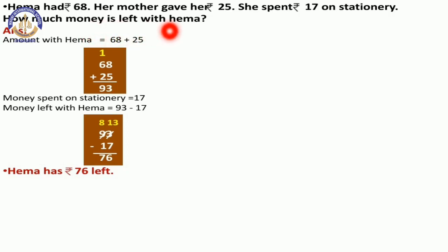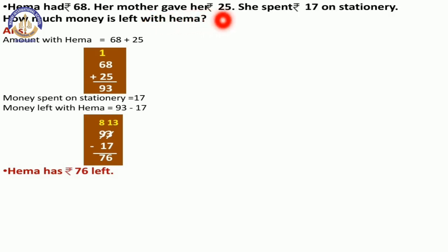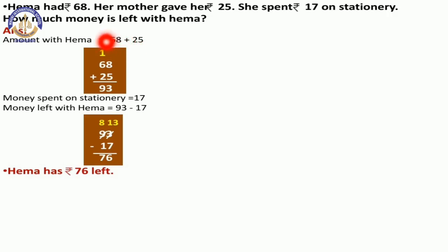What do you have to do first in a word problem? First, read the instruction. So Hema had Rs.68, and her mother gave her Rs.25. So the amount with Hema is equal to Rs.68 plus Rs.25. We do addition and we get the answer Rs.93.